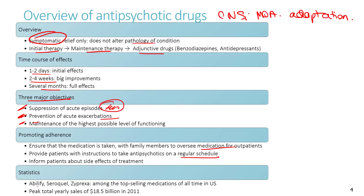Three antipsychotic drugs — all considered atypical or second-generation antipsychotics — are among the top-selling medications of all time in the U.S., with combined yearly sales of $18.5 billion. This is a huge and very much in-demand market.